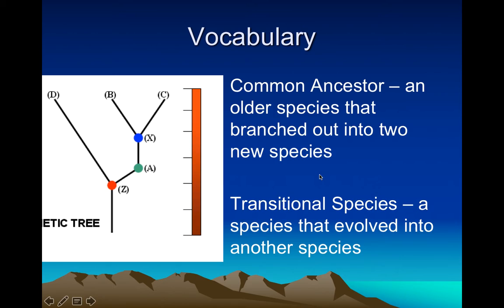We see transitional species a lot in trees based on fossils, because sometimes we have fossils for those transitional species — as we saw with the dolphin cladogram. That's how you identify common ancestors and transitional species.